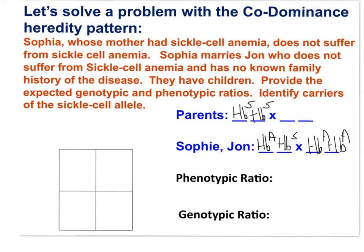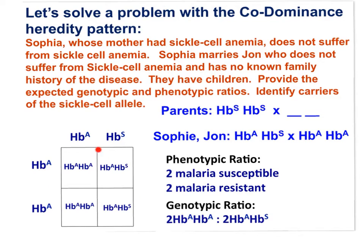The question is: what are the expected genotypic and phenotypic ratios of their children? We place Sophia's gametes and John's gametes into the Punnett square. The phenotypic ratio would be two individuals susceptible to malaria and two resistant to malaria. The genotypic ratio would be two individuals with homozygous normal hemoglobin and two individuals who are heterozygous, carrying the sickle cell allele even though they don't express it.